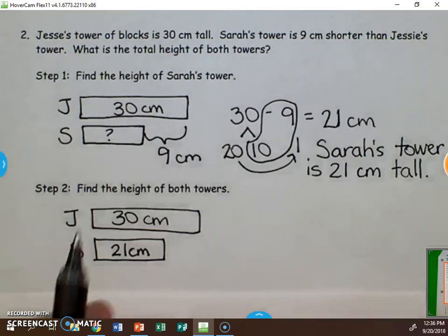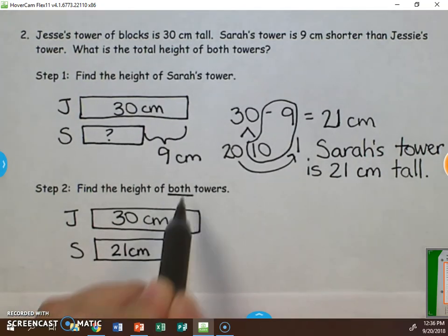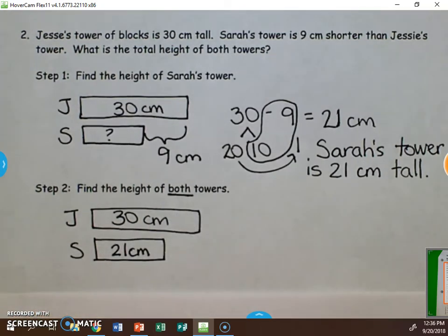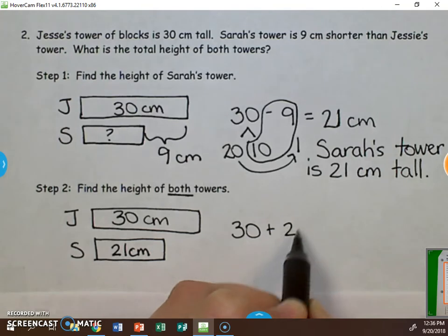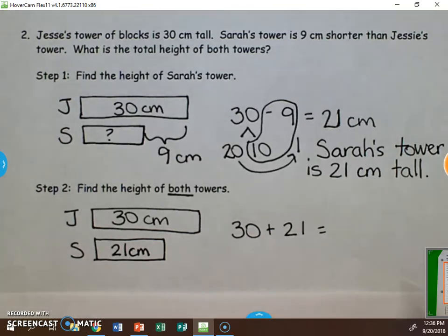We know we want to find the height of both towers. When we see that we want to do both, we add. So we are going to add together 30 plus 21 to get our answer.